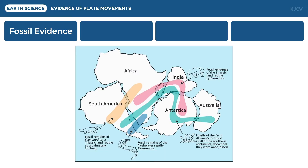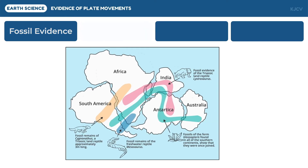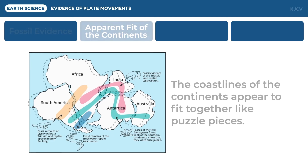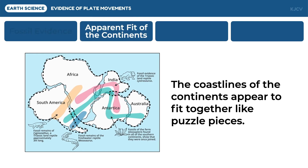Their distribution patterns would result in the disconnection of the continents, thus giving us the second evidence of plate movements, which is the apparent fit of the continents. The coastlines of continents, even if we do not take into consideration the distribution pattern of the organisms found by paleontologists, will still fit together like puzzle pieces. It is not only in Gondwana in which the continents fit together perfectly.